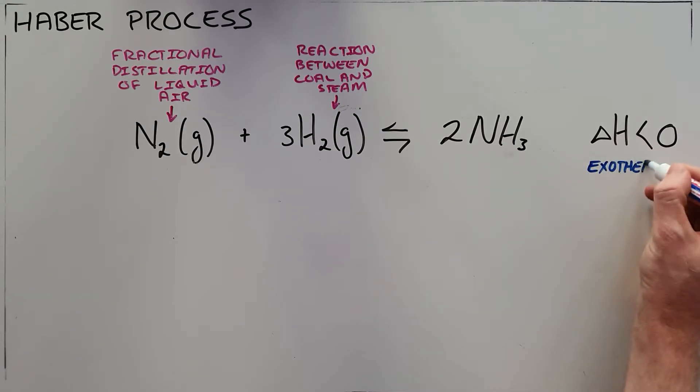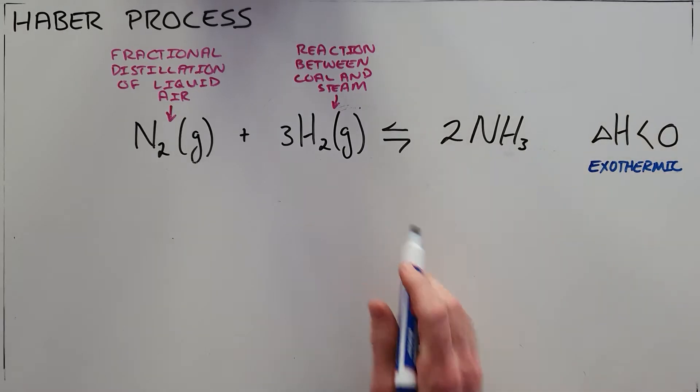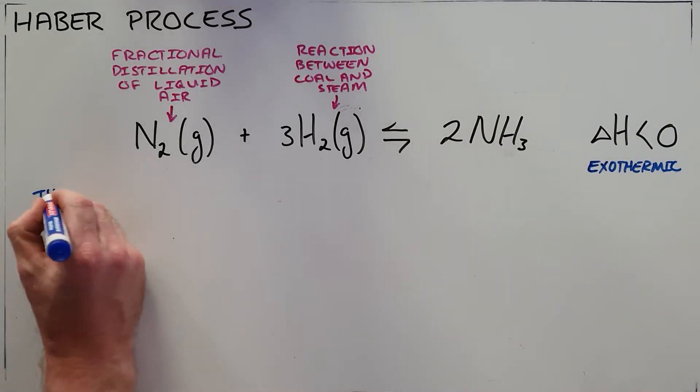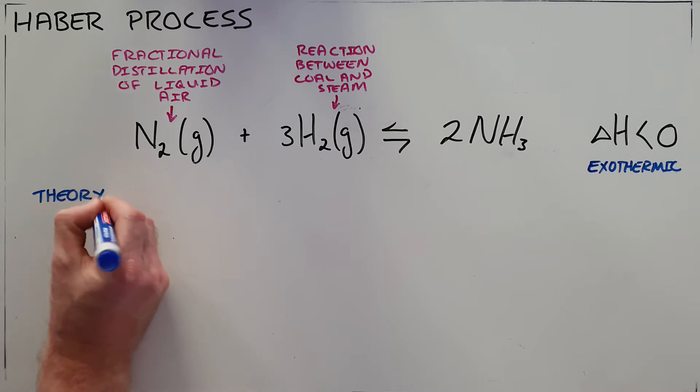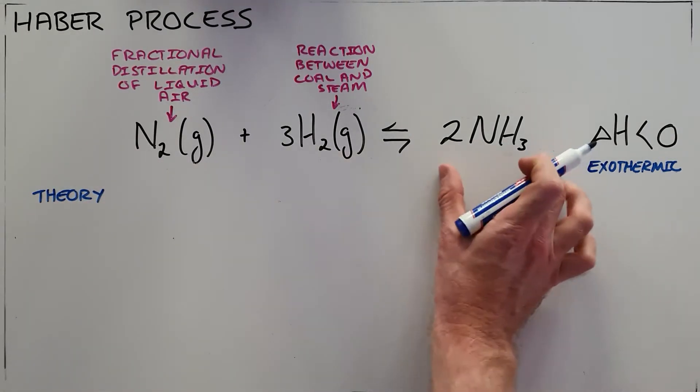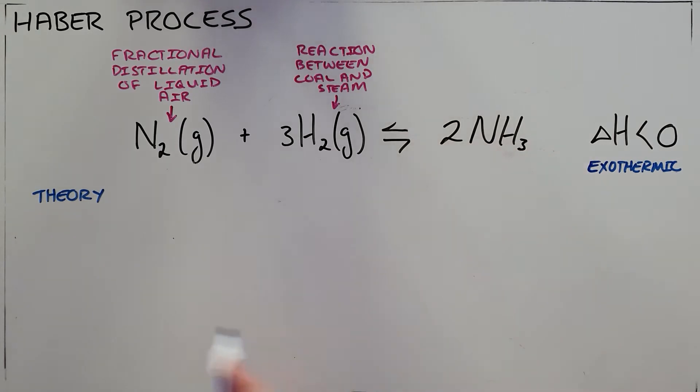In industry, when trying to produce as much ammonia as possible, theoretically from Le Chatelier's principle, the way to favor the forward reaction would be to do it at a low temperature because the forward reaction is exothermic, so the lower the temperature the more we would favor the forward reaction.